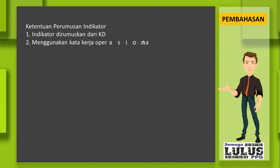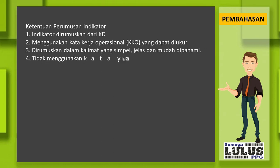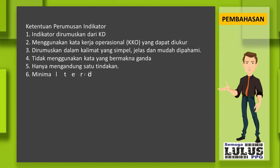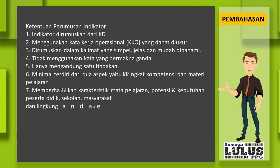Ketentuan perumusan indikator: 1. Indikator dirumuskan dari KD. 2. Menggunakan kata kerja operasional (KKO) yang dapat diukur. 3. Dirumuskan dalam kalimat yang simpel, jelas dan mudah dipahami. 4. Tidak menggunakan kata yang bermakna ganda. 5. Hanya mengandung satu tindakan. 6. Minimal terdiri dari dua aspek yaitu tingkat kompetensi dan materi pelajaran. 7. Memperhatikan karakteristik mata pelajaran, potensi dan kebutuhan peserta didik, sekolah, masyarakat, dan lingkungan daerah.